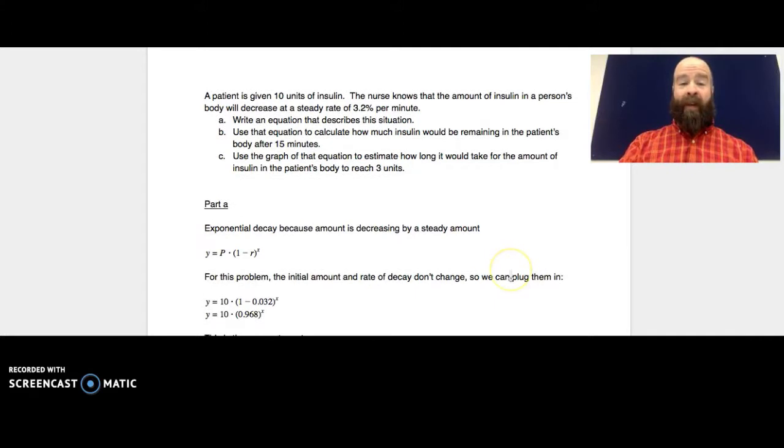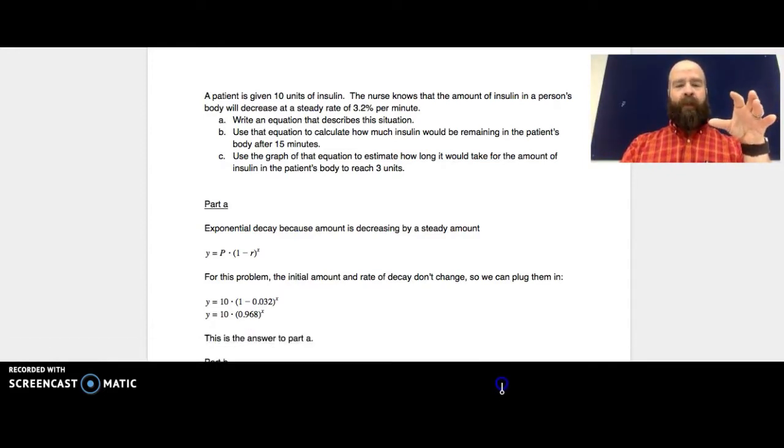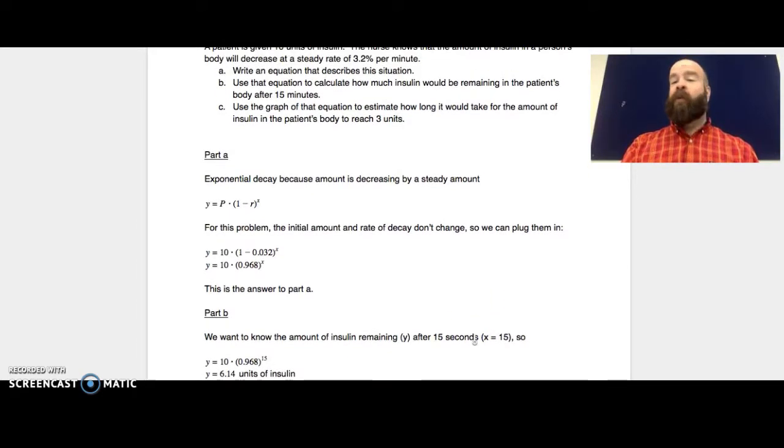So that's the answer to part A there. Now for part B, it says use that equation to calculate how much insulin will be remaining in the patient's body after 15 minutes. Now we did do this in class. Essentially, we're trying to figure out what the y is when the x, the number of times it's been calculated, is 15. So when I look at the math for that, it's basically plugging in 15 for x. And when I plug in 15 for x, I stick that in my calculator and follow order of operations, I'll get 6.14 units. Simple problem. That's plug and chug.